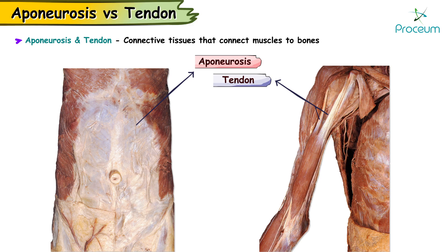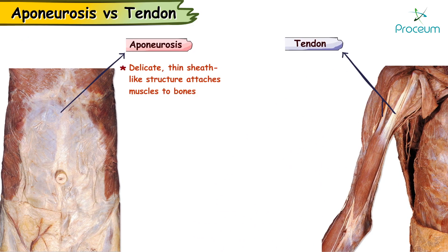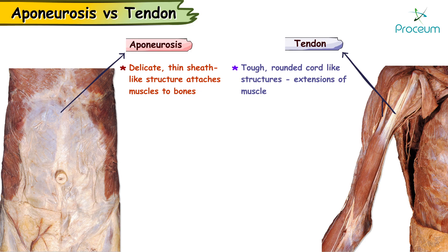Epineurosis is an extremely delicate thin sheath-like structure which attaches muscles to the bones, whereas tendons are tough, round, cord-like structures which are extensions of the muscles.